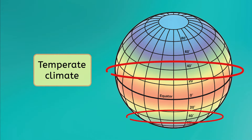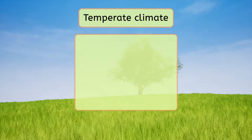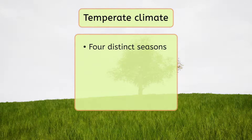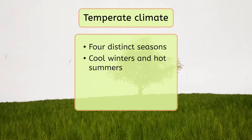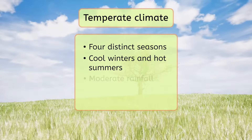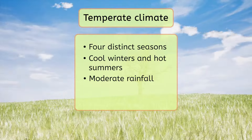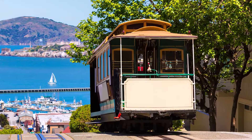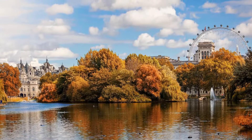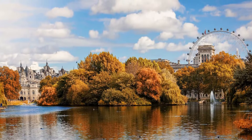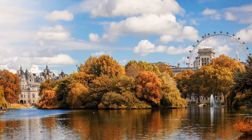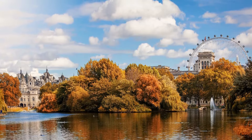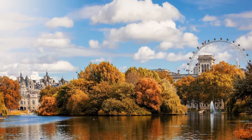If we continue past the tropical and dry climates, we'll find temperate climates next. Temperate climates have four distinct seasons, where it tends to be cool in the winter and hot in the summer. They also have a moderate amount of rainfall, so there is lots of plant and animal life here. San Francisco, California and London, England both have this climate type. If you like to get a mix of all four seasons without getting too cold, a temperate climate might be for you.